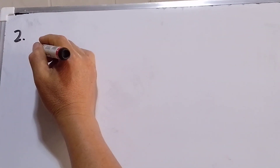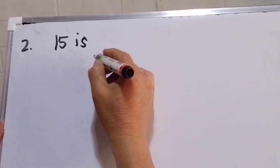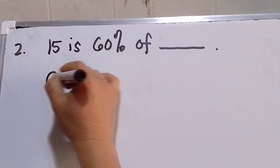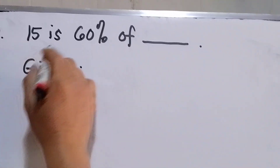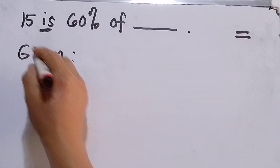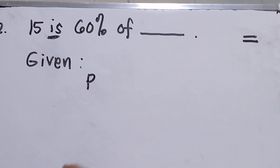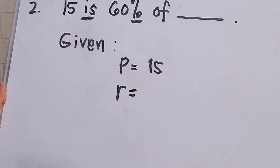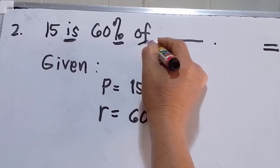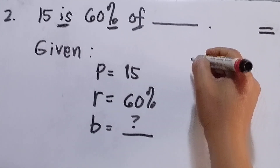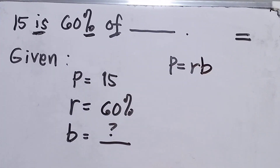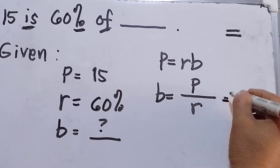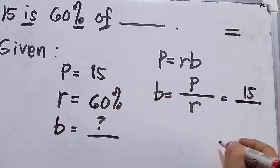Number two: 15 is 60 percent of blank. Writing the given: 15 is the percent P, 60 percent is the ratio R, and the blank is the unknown base B. We apply the formula P equals R times B, rearranged to solve for B: B equals P over R.